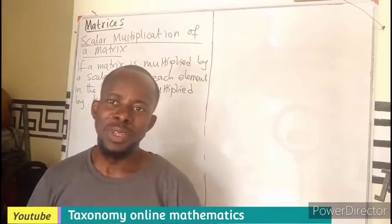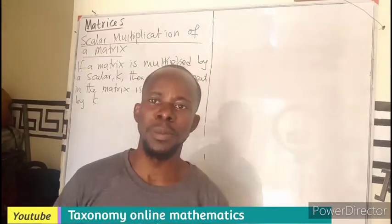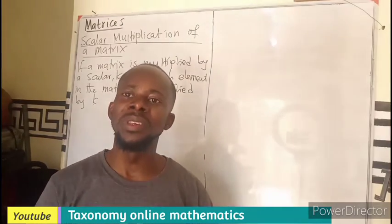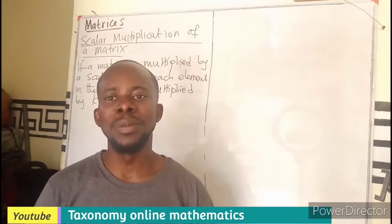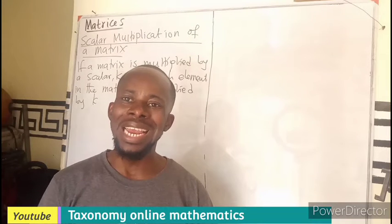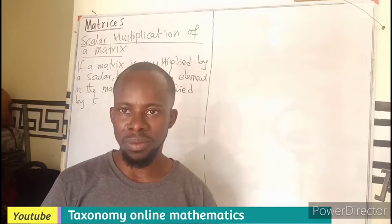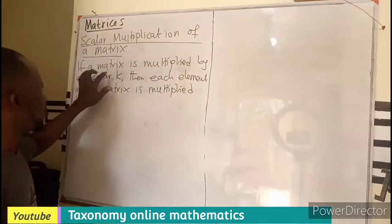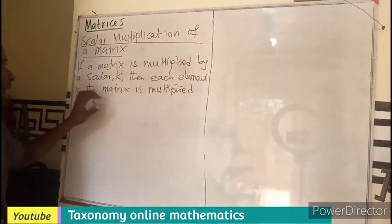Hello, welcome to Taxonomy Online Mathematics. Today we are continuing with the topic matrices or matrix. We want to take the scalar multiplication of a matrix. If a matrix is multiplied by a scalar k, then each element in the matrix is multiplied by k.